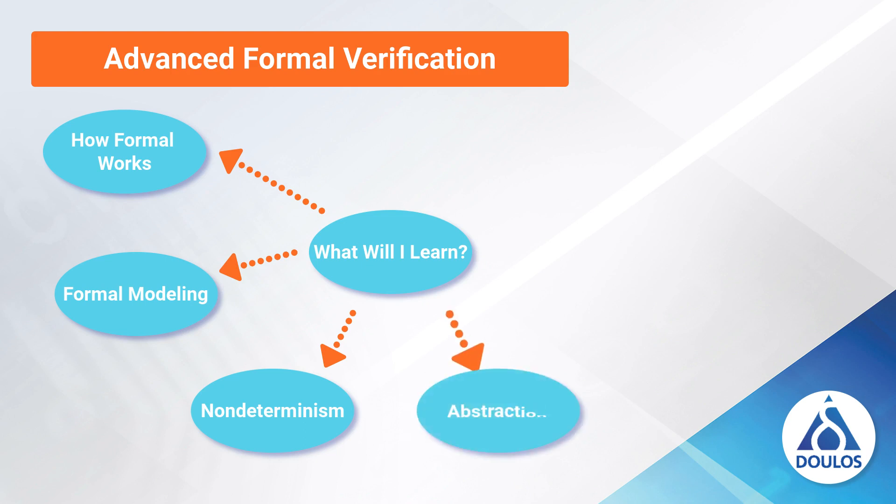You'll then learn how to reduce design complexity and introduce abstraction. You'll learn how you can use abstractions in both the design or in a checker, and we'll discuss the three types of abstraction: data, temporal, and behavioral abstractions.